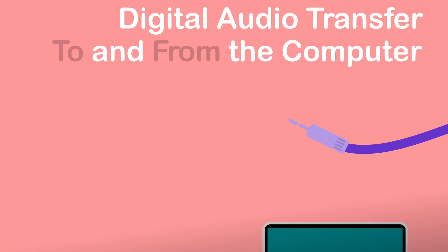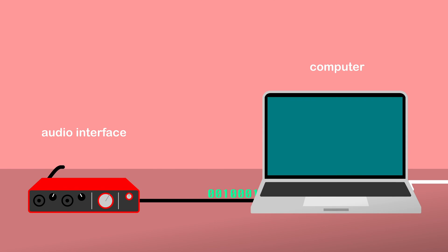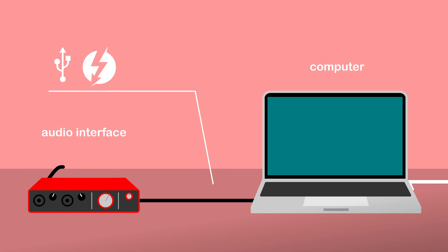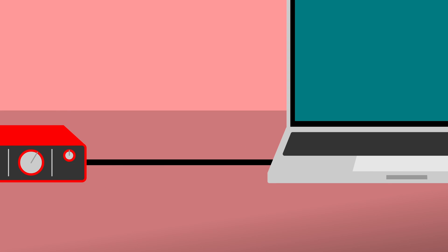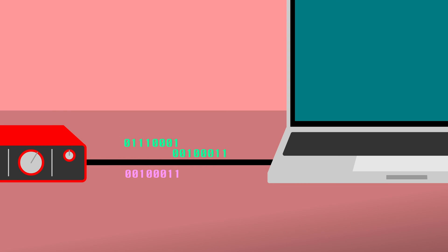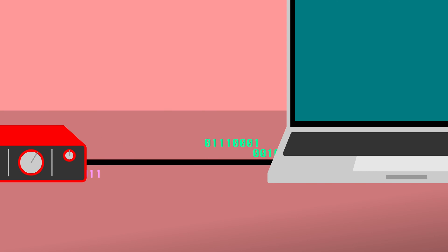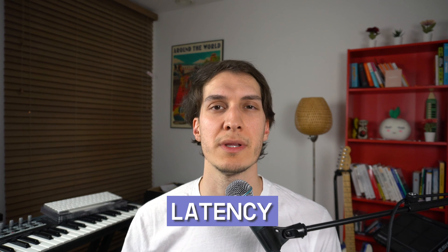Most audio interfaces perform four main functions in one box. The most basic function is to provide a way for your computer to exchange digital audio signals with the outside world. Most current interfaces provide that through a USB or a Thunderbolt connection, but there are other alternatives such as Firewire and Ethernet. The type of connection will determine the number of simultaneous audio channels you can send and receive, and also the time it takes for your audio to travel to and from the computer — referred to as the latency of an interface — and it's very important that that is as short as possible for a smooth recording experience.